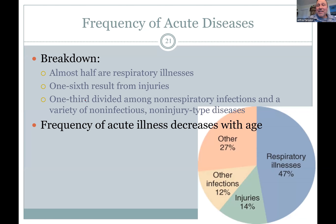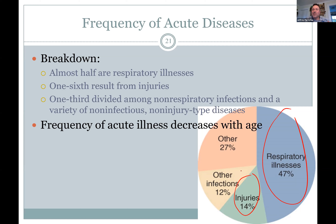Acute diseases come on quickly and go away quickly. Acute pain is when you step on a nail; chronic pain is cancer pain or bone pain that lasts a long time. Acute illnesses — respiratory colds and flus — are acute, they come and they go. Injuries usually involve acute pain or problems and then they heal and don't last the rest of your life. As you get older, acute illnesses give way to more chronic issues.